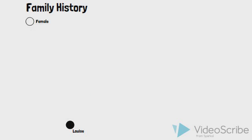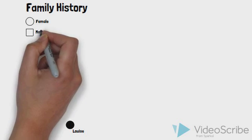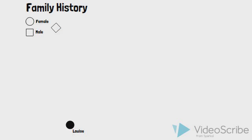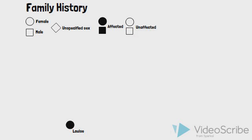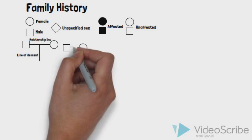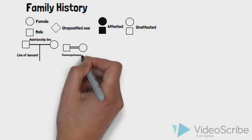You start by drawing a filled circle to represent Louise. In a pedigree, females are depicted as circles and males are depicted as squares. Diamonds represent an unspecified sex. Affected individuals are symbolized by filled symbols, and the proband — the affected individual who first presents seeking care — is indicated with an arrow. Horizontal lines are used to represent a marriage or union, and vertical lines link these unions with resulting offspring. Individuals within the same generation are placed along the same horizontal plane.